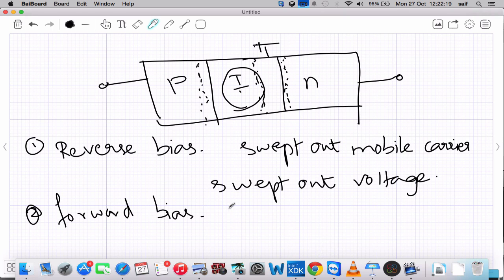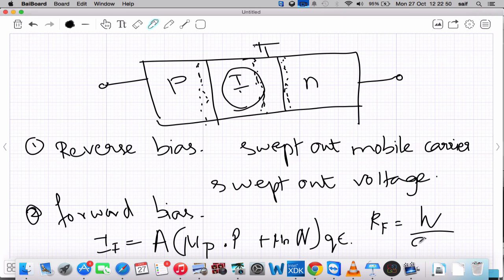So the forward current is given by I_f equals A times (mu_p plus mu_n) times q, and the forward resistance is given by R_f equals w by A.